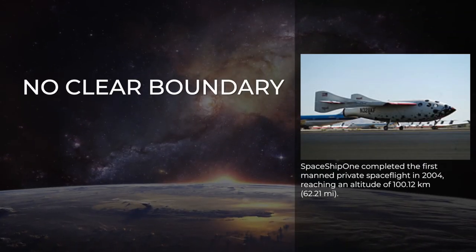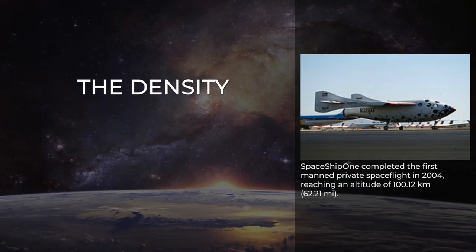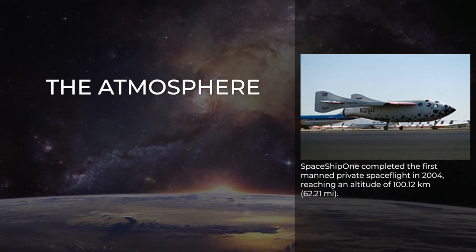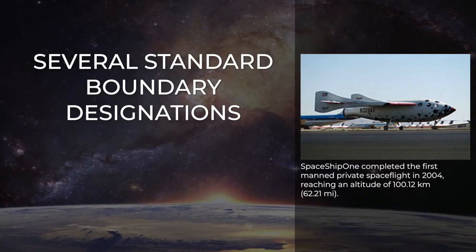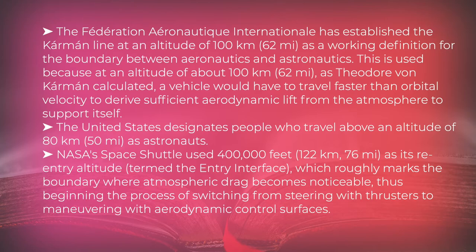There is no clear boundary between Earth's atmosphere and space, as the density of the atmosphere gradually decreases as the altitude increases. There are several standard boundary designations. The Fédération Aéronautique Internationale has established the Kármán line at an altitude of 100 kilometers, 62 miles, as a working definition for the boundary between aeronautics and astronautics. This is used because at an altitude of about 100 kilometers, 62 miles, as Theodore von Kármán calculated, a vehicle would have to travel faster than orbital velocity to derive sufficient aerodynamic lift from the atmosphere to support itself.